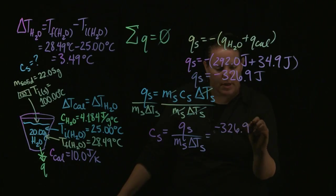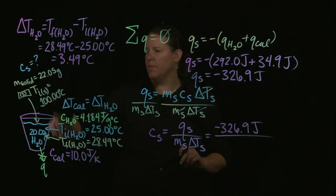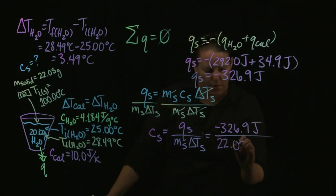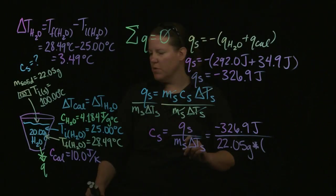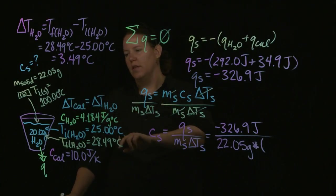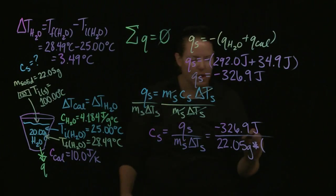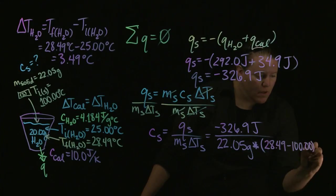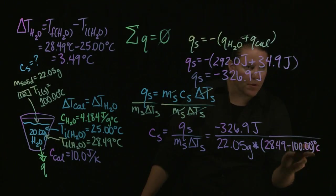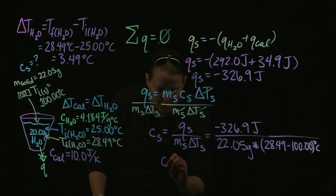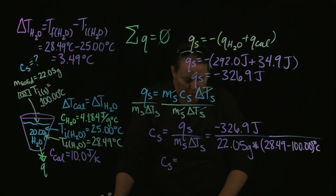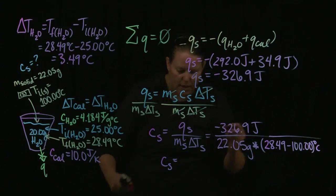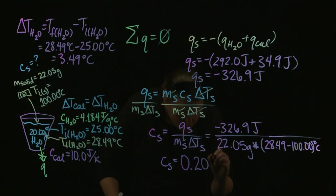Plugging in: negative 326.9 joules divided by the mass of the solid — 22.05 grams — divided by the change in temperature of the solid. The initial was 100 degrees Celsius and the final was 28.49 degrees Celsius, so 28.49 minus 100. Notice this gives a negative number, which cancels out with that negative number, giving us a positive result. So: 326.9 divided by 22.05 divided by (28.49 minus 100) gives approximately 0.207.